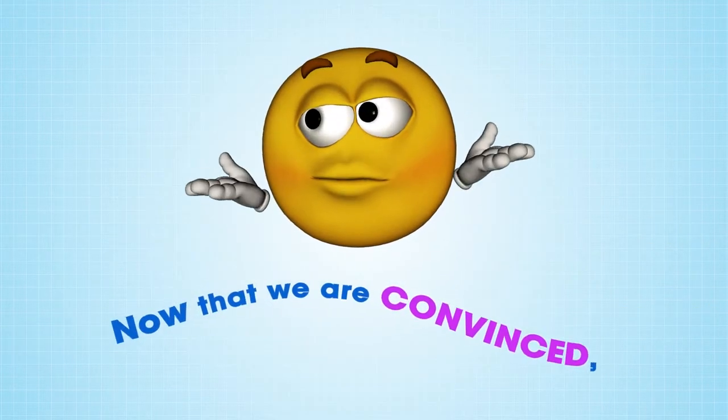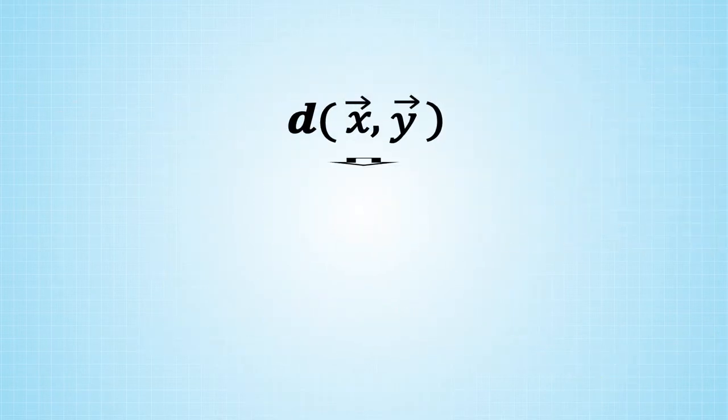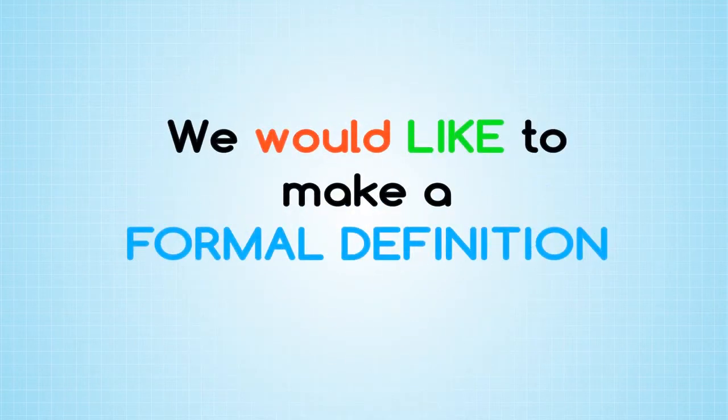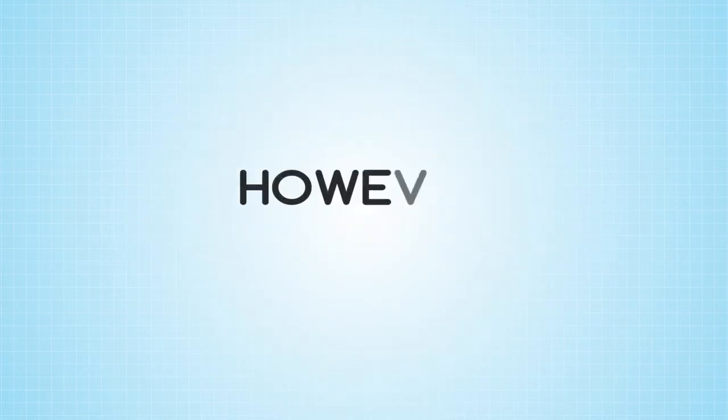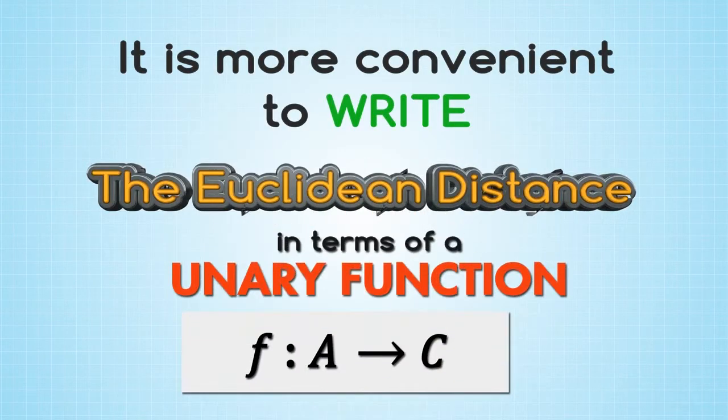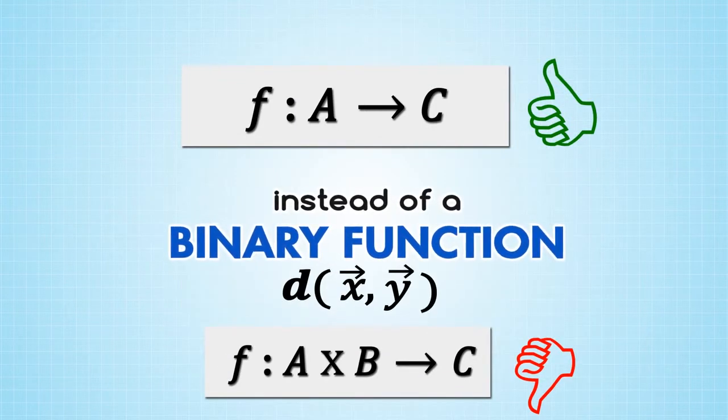Now that we are convinced, or at least will be convinced, that this particular d(x,y) is a distance function, we would like to make a formal definition. However, it is more convenient to write the Euclidean distance in terms of a unary function, instead of a binary function d(x,y).